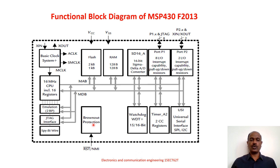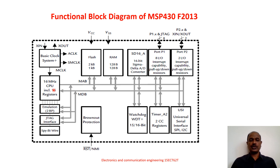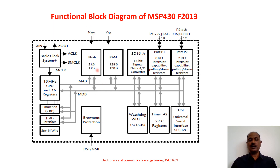There is one more block called brownout protection. The main function of this block is to keep monitoring the supply voltage VCC given to the controller. Whenever the supply voltage falls below a fixed threshold, the processor will be reset by this brownout detector. When the voltage goes below the predetermined threshold, the processor should not be allowed to continue its operation and memory should not be altered, because at this low voltage the processor execution or data alteration could corrupt the memory.